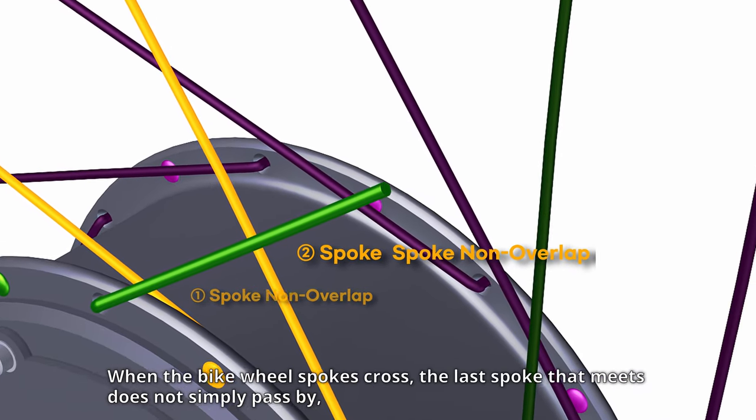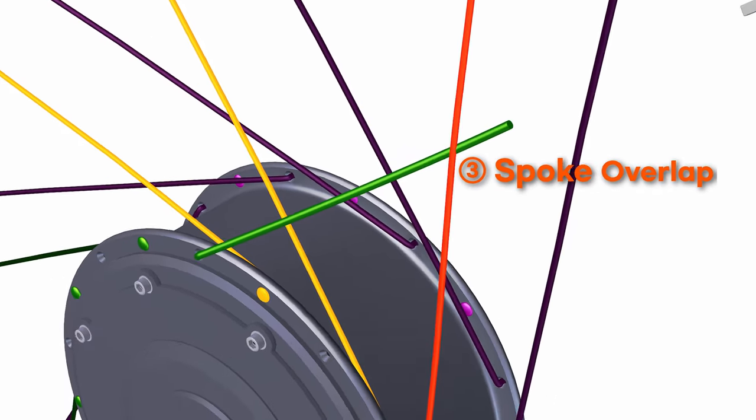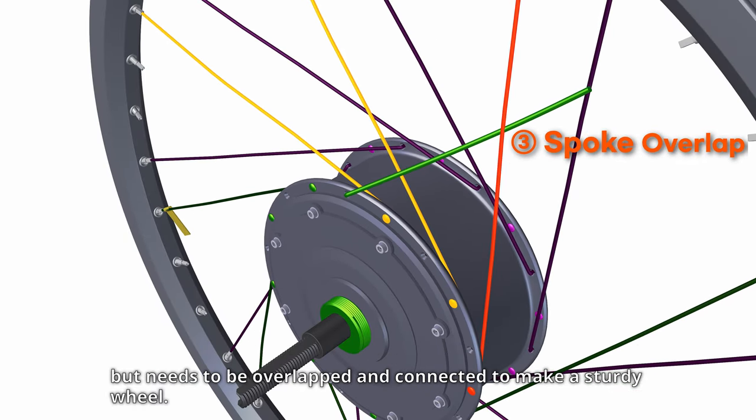When the bike wheel spokes cross, the last spoke that meets does not simply pass by, but needs to be connected to make a sturdy wheel.